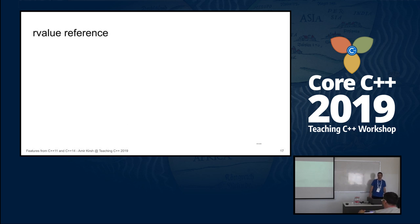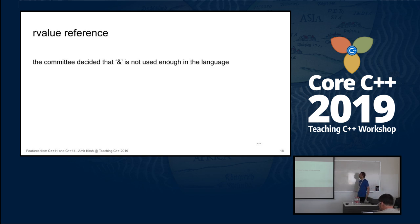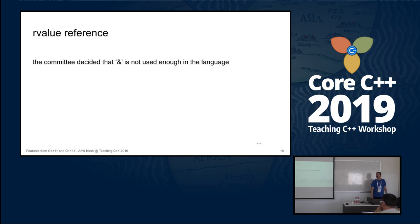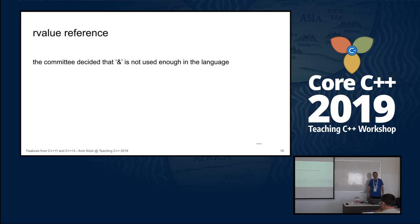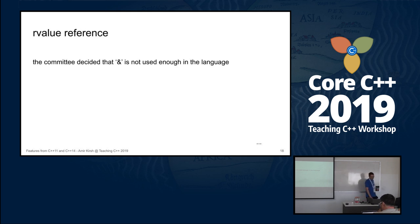Then you reach rvalue references, and you have to be strong. The committee decided that ampersand wasn't being used enough in the language — it's only used for bitwise/logical AND, getting an address, and defining a reference. So there might still be room for another ampersand somewhere. What's the problem we want to solve? We start with the problem first.